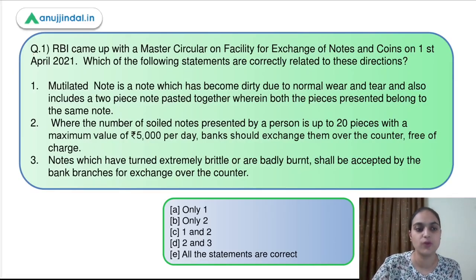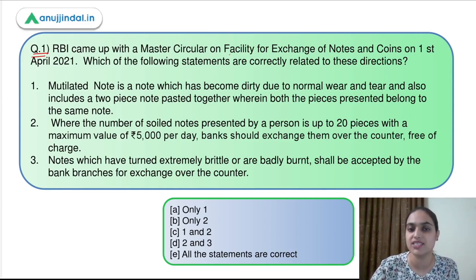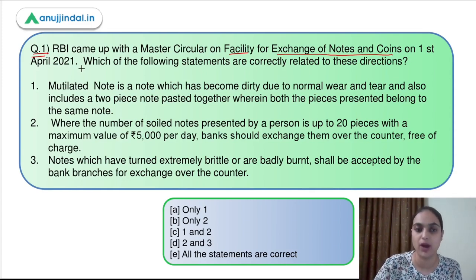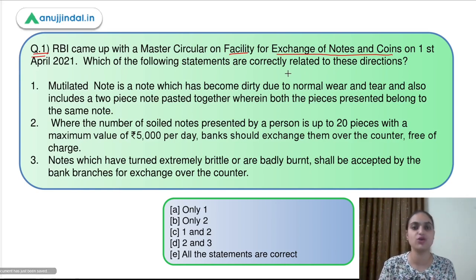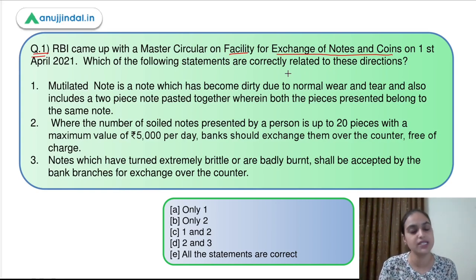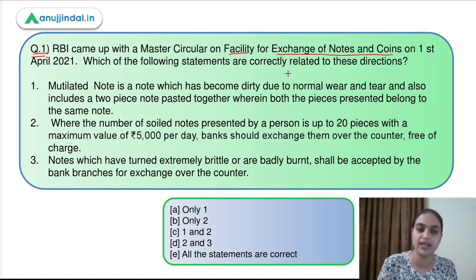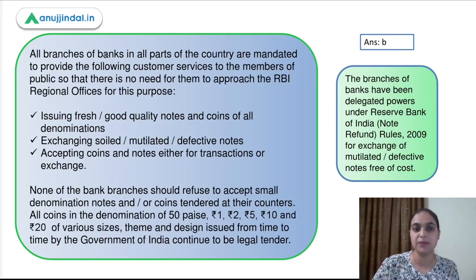Question number one says that RBI came up with a master circular on facility for exchange of notes and coins on 1st April 2021. Which of the following statements are correctly related to these directions? RBI recently came up with these directions related to exchanging of coins and notes and the entire process of dealing with soiled or mutilated notes. Let's first discuss these master directions and then read the statements to answer this question.